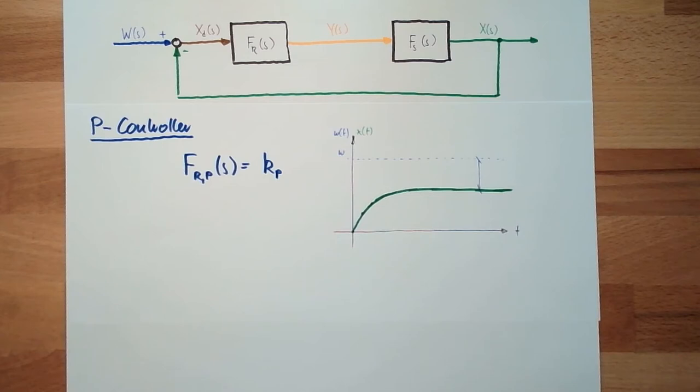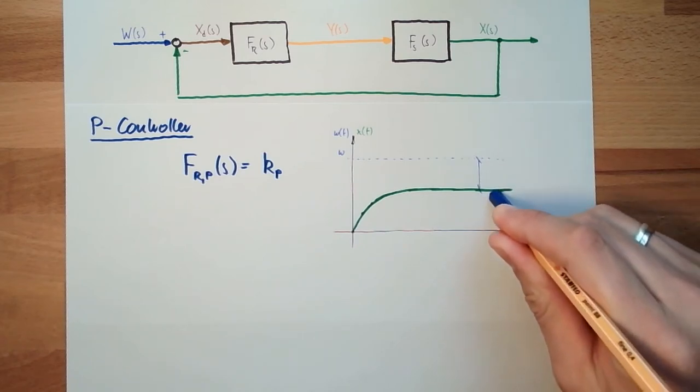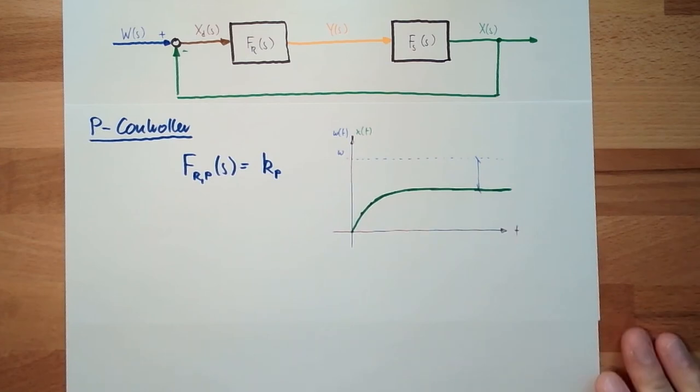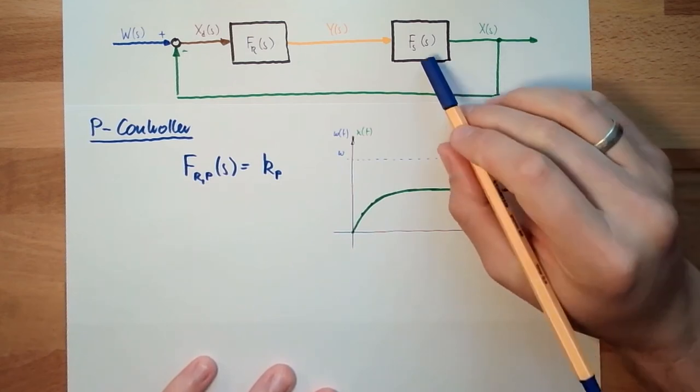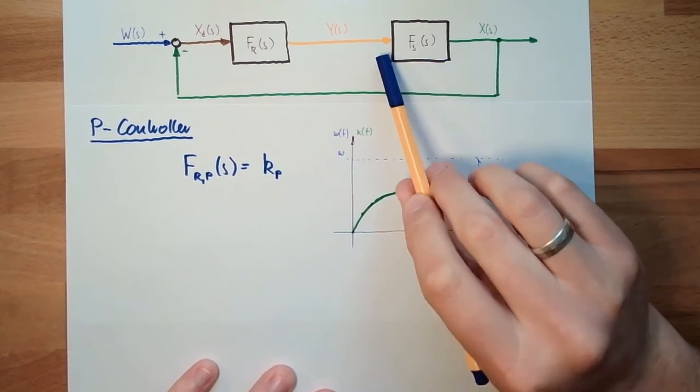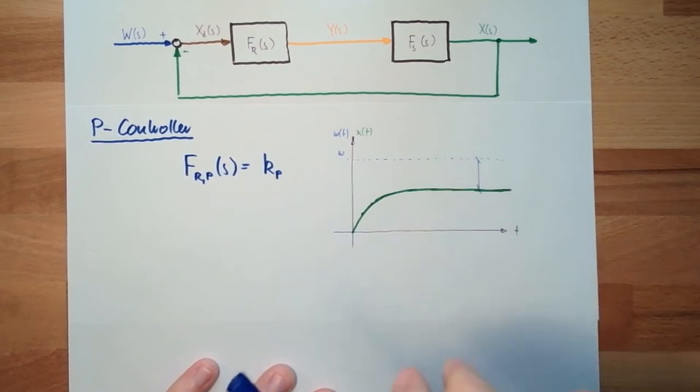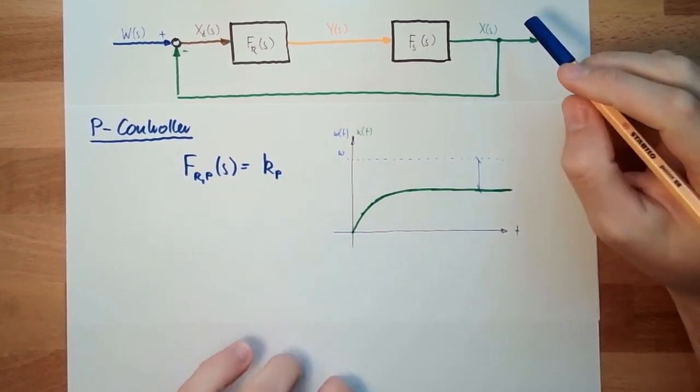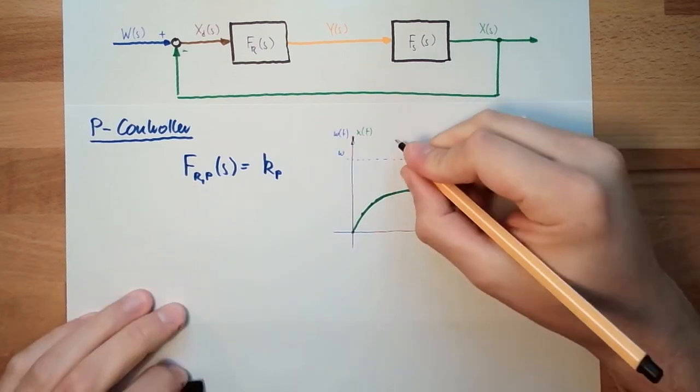In common case, it will simply not be able to bring the regulated value, the controlled variable, to the reference variable. P controller not possible. In special systems, it might happen. If the system's behavior is like an integrator, then this is okay. For instance, I will write here just common case.